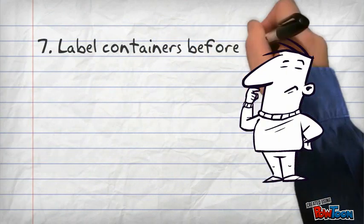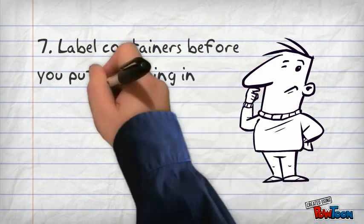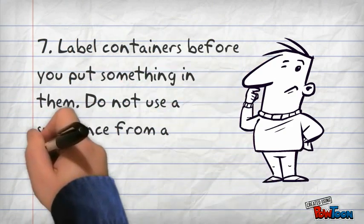Rule number seven. Label containers before you put something in them. Do not use a substance from a container that is not labeled.